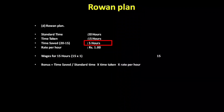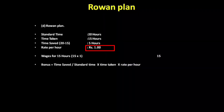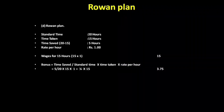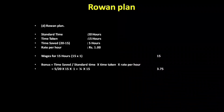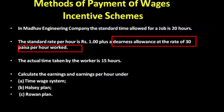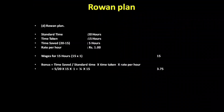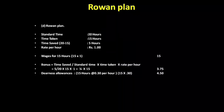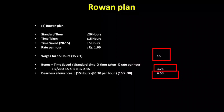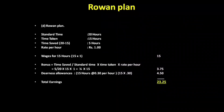So time saved is 5 hours, standard time is 20 hours, time taken is 15 hours, and rate per hour is 1 rupee. Bonus equals 5 by 20 into 15 into 1 rupee equals 3 rupees 75 paise. DA is 15 hours into 30 paise equals 4 rupees 50 paise. Total earnings: 15 rupees plus 3.75 plus 4.50 equals 23 rupees 25 paise.